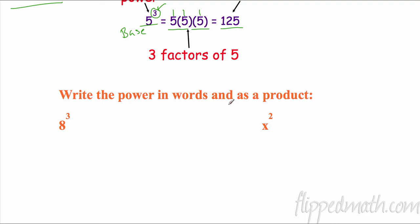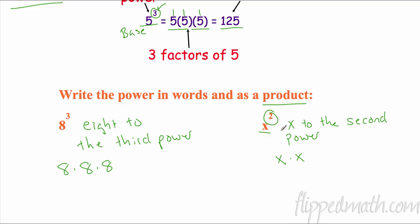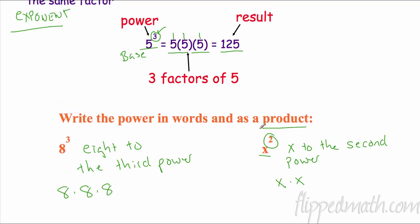Over here we have x to the second power. I can rewrite that as x times x because I have the base x this many times. When we have it to a power of two, sometimes we call that squared, so you could write x squared. Before you move on in the video, make sure you have everything on this page. If you don't, pause and make sure you get everything before you move on.